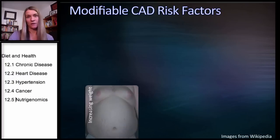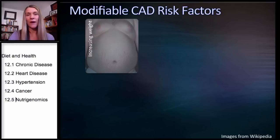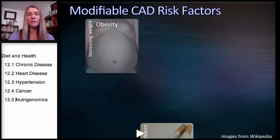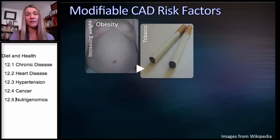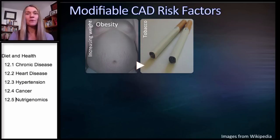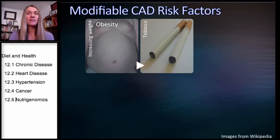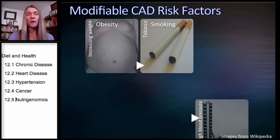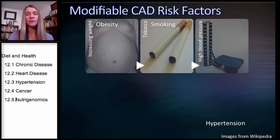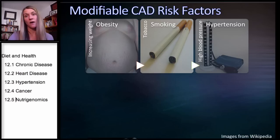What about things we can change? Increasing weight is one modifiable risk factor — obesity is definitely a risk. Tobacco is probably one of the most powerful modifiable risk factors for heart disease. You have the choice to smoke or not, and you can control weight to a certain extent. High blood pressure, called hypertension, is also a risk factor for developing heart disease.